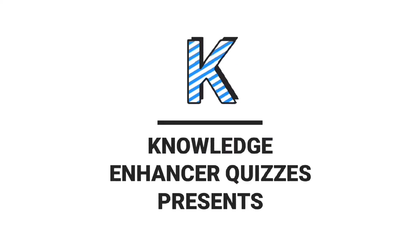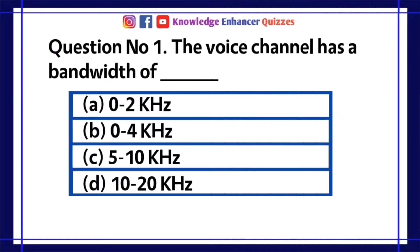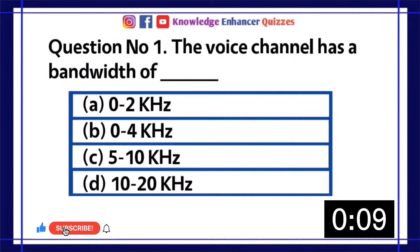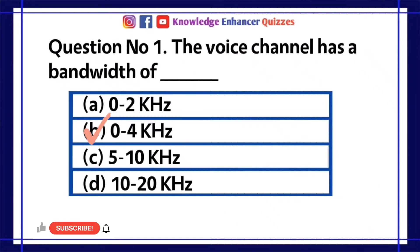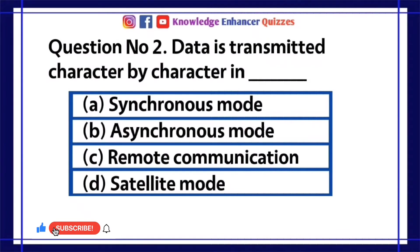Knowledge Enhancer Quizzes presents Data Communication Quiz 2. Question number 1: The voice channel has a bandwidth of dash. A. 0 to 2 kHz. B. 0 to 4 kHz. C. 5 to 10 kHz. D. 10 to 20 kHz. Option B is the right answer.